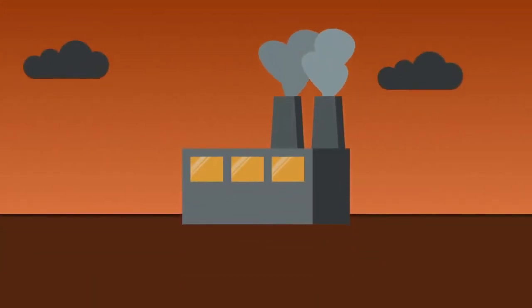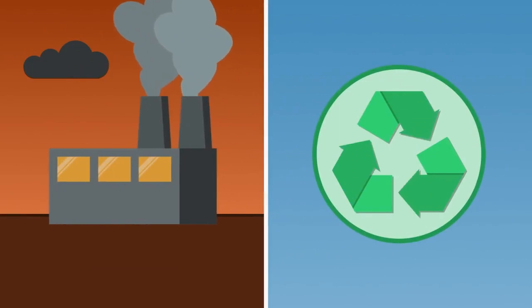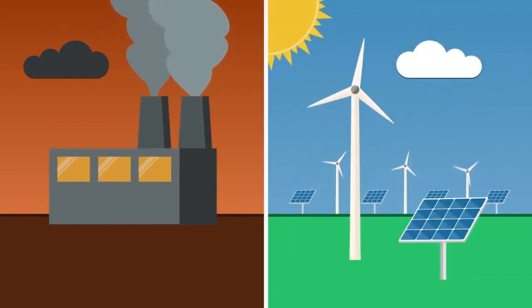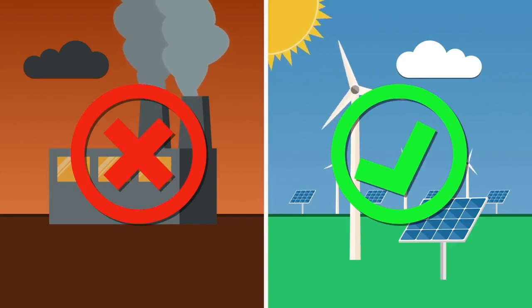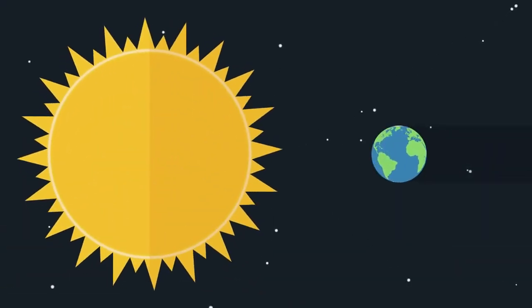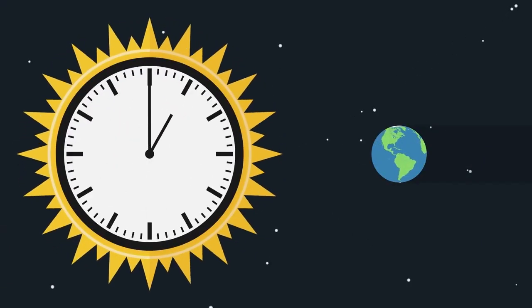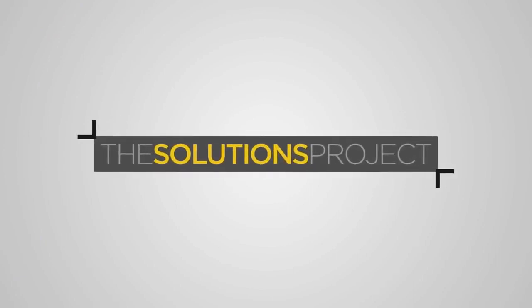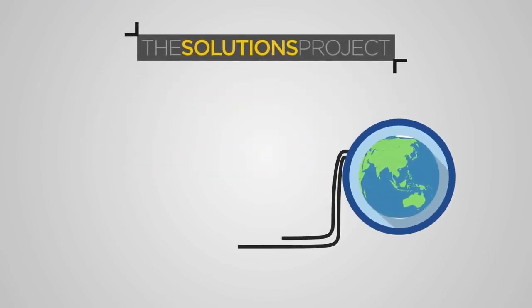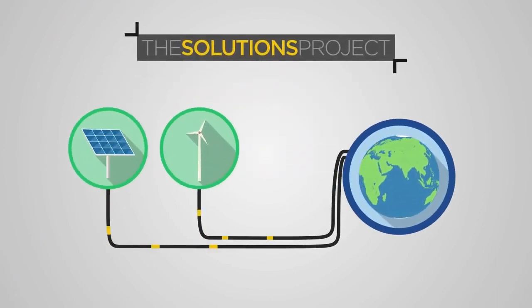Instead of burning fossil fuels, we need to convert to renewable energy, such as solar and wind power, which emit zero carbon emissions when operating. Energy from the sun and the wind are infinite. Unlike fossil fuels, we will never run out of them. More solar energy falls on the Earth in one hour than all the energy that our civilizations consume in one year. Civil engineers from the Solutions Project calculated that we could power most of the world with only renewable energy if we just actually decided to do it.